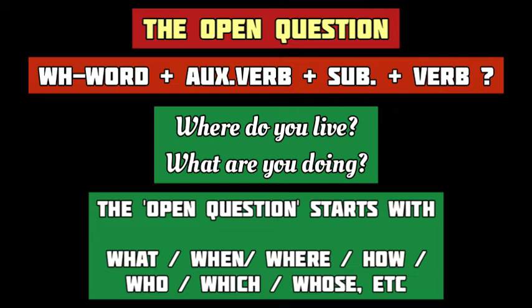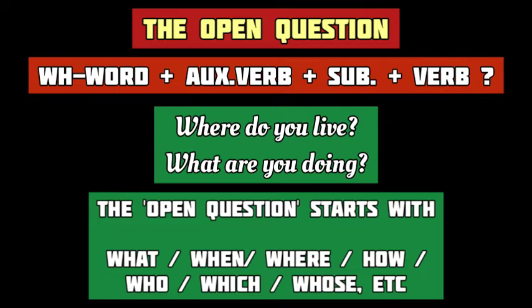'What are you doing?' This is also an open question because it starts with the question word 'what', followed by the helping verb 'are', then the subject 'you', followed by the principal verb in the fourth form 'doing'. And this question is also not answerable in yes or no. But remember, in an open question, it's extremely important to put the helping verb or auxiliary verb immediately after the WH word. For example, 'Where you live' is not a correct sentence. The helping verb 'do' must be used immediately after the question word 'where'. In an interrogative sentence, the auxiliary verb always comes before the subject.